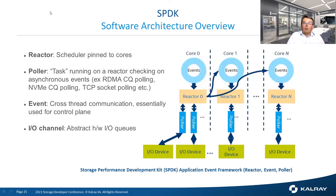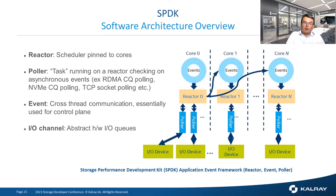Looking in more detail at the SPDK application event framework, each core executes the same thread, which is made of several components. A reactor, which is basically the scheduler bound to the core, executes several pollers. Pollers are tasks running on a reactor and checking for asynchronous events — such as RDMA completion queues, NVMe completion queues, TCP socket polling, and so on. When cross-thread communication is needed, the SPDK application event framework provides events to communicate between threads in a lockless way using message passing. This is essentially used for control plane. Finally, we have IO channels, which are an abstraction layer to abstract hardware IOQs.